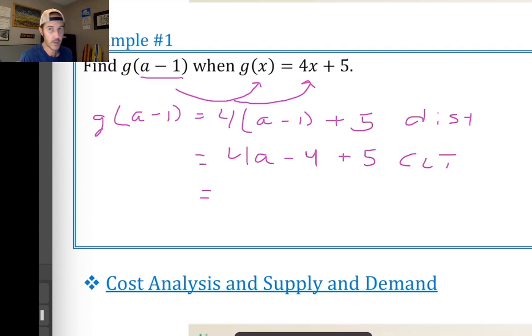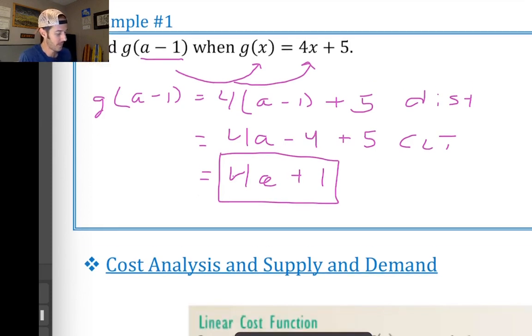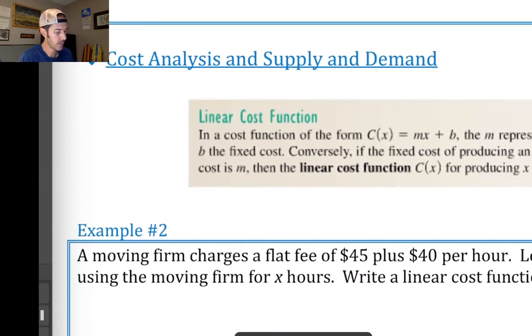And don't forget to keep the plus 5. And then we will combine like terms. There are no variable terms to combine, so the 4a is still the 4a. And the negative 4 plus 5 is a plus 1. And I like to put a box around my final answers. So, I promise, that says 4a plus 1.